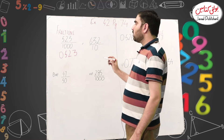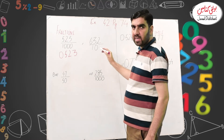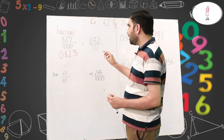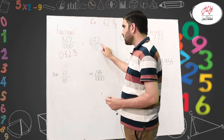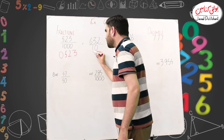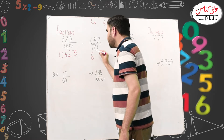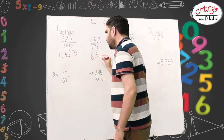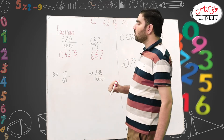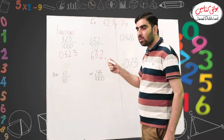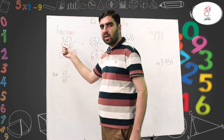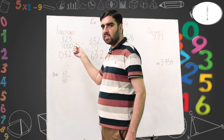In 632 over 10, there is one zero in the denominator, so the decimal point moves one digit from right to left — it goes before the 2. So the answer is 63.2. Why did it move one digit? Because the denominator is 10, which has one zero. In the previous example, it moved three digits because the denominator had three zeros.